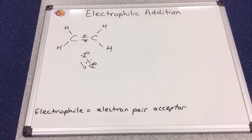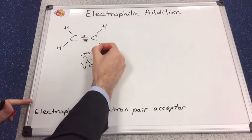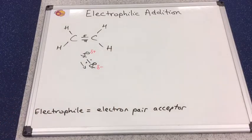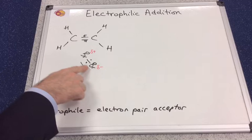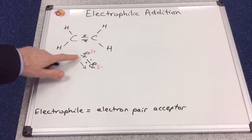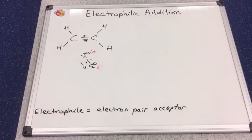What that does is it puts a dipole onto the bromine molecule. This bottom bromine has a greater share of the electrons, so it's electron-rich, and this part of the bromine molecule has got less of a share of the electrons, so we would say that it's electron-deficient.